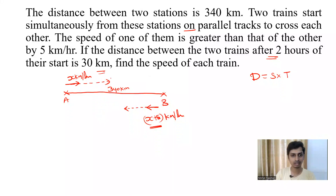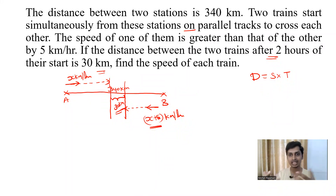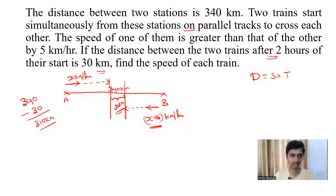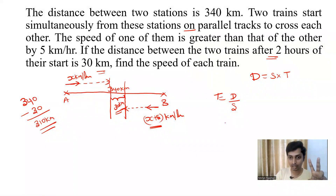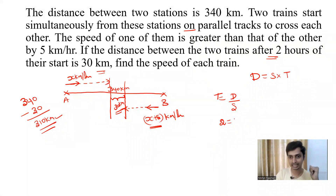After two hours, the distance between both trains is 30 km. Out of 340 km, if the remaining gap is 30 km, both trains together have covered 310 km. Together they have covered 310 km moving towards each other, so the total distance covered by both trains is 310 km.